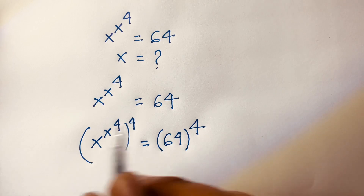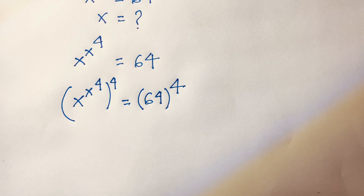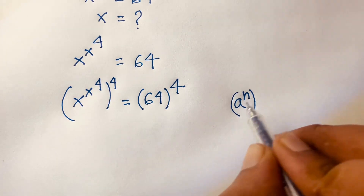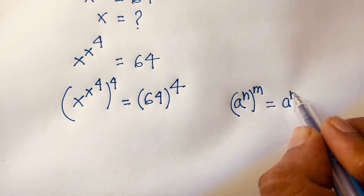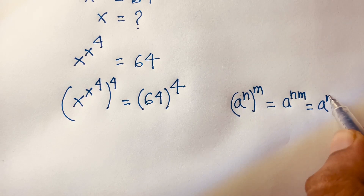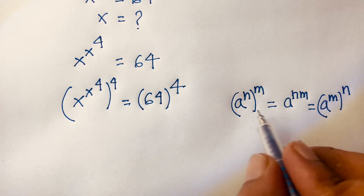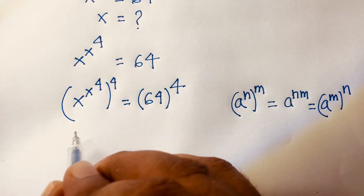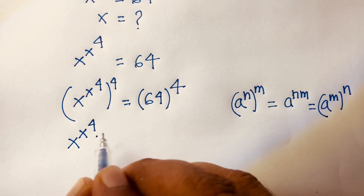Using the exponential rule: a to the power n, whole to the power m, is equal to a to the power n times m. Applying this rule, x to the power x to the power 4 becomes x to the power (x times 4), which is x to the power 4x.